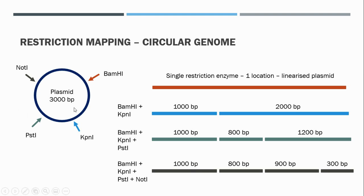As we perform multiple combinations of restriction enzymes, we can identify the position of each restriction site in relation to the others. This gives us an idea of the position of these restriction enzymes within the genome, allowing us to say, for example, that there's a BamHI restriction site here or a KpnI restriction site there — and this allows us to compose some idea of the sequence of the plasmid.